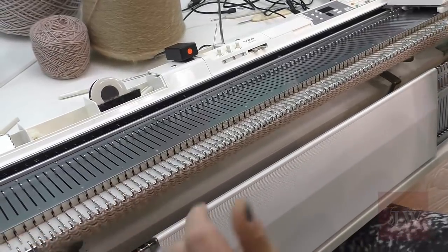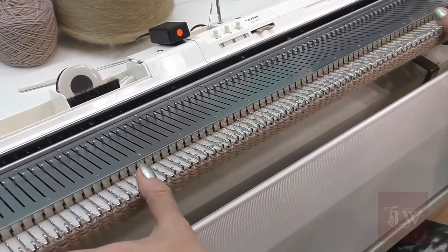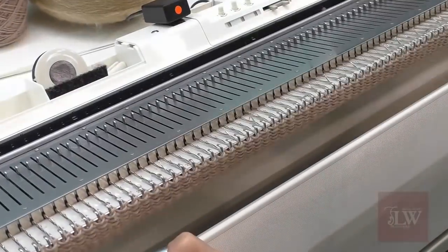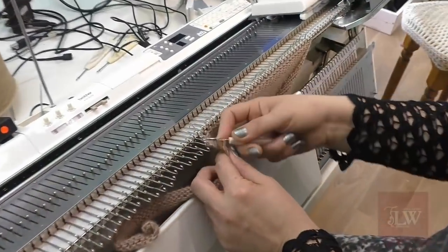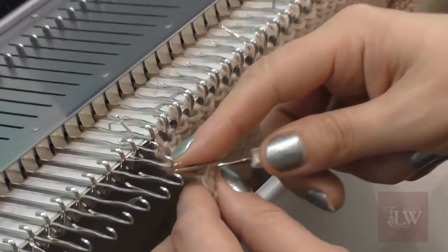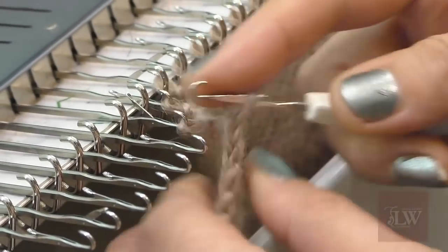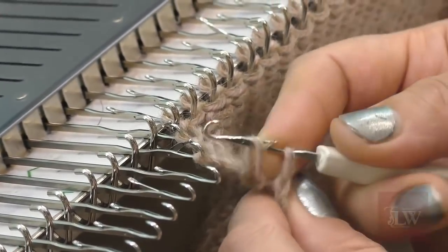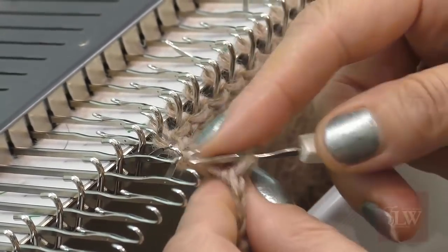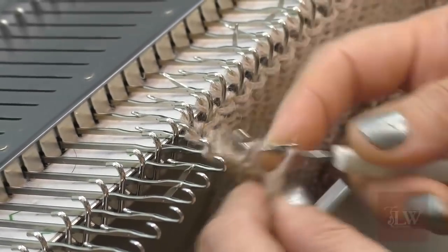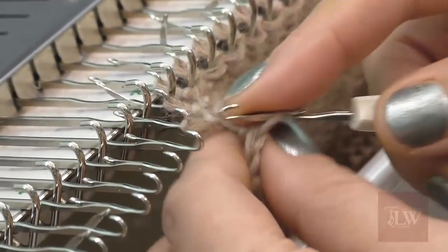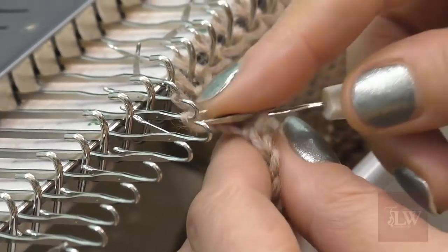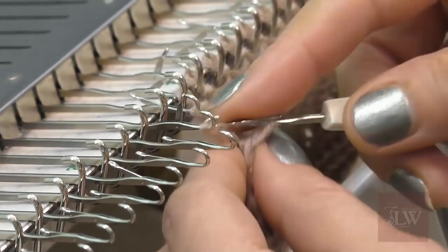After I'm done with my 400 rows I will cast off and we will continue creating our scarf. Another important requirement to make this technique work is to use yarn that's at least 50% wool. Here we are, we knitted 400 rows and now we are casting off. You don't have to follow my instructions as far as the number of rows, you just need to knit a long rectangle. The length of your rectangle should be about 30% longer than the desired length of your scarf.